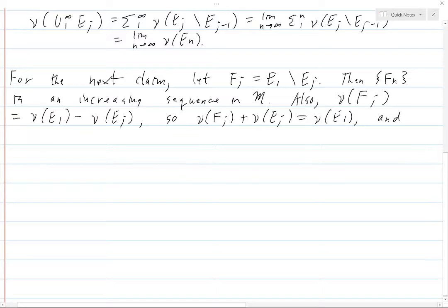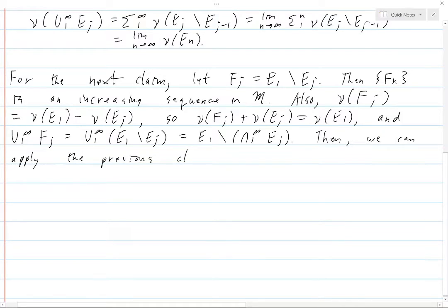And we also have union from 1 to infinity of Fj. Now, let's just look at these as sets. This is just the union of E1 set minus EJ, but then, by set operations, this is E1 set minus the intersection from 1 to infinity of EJ. Okay, so now we can apply the previous claim.